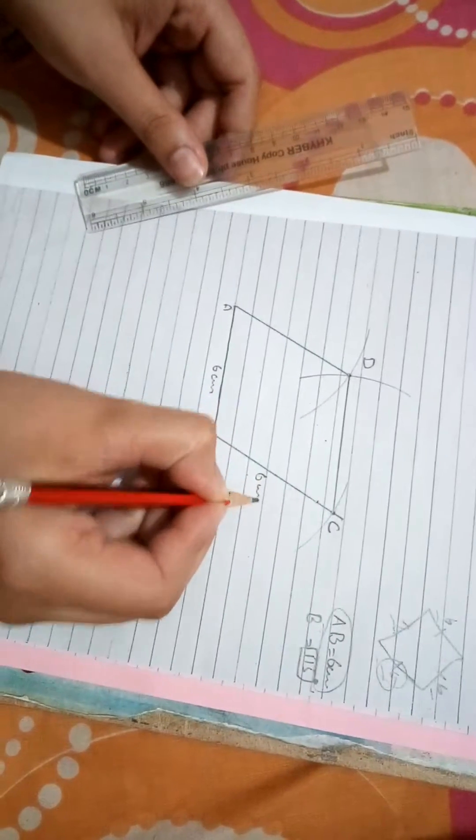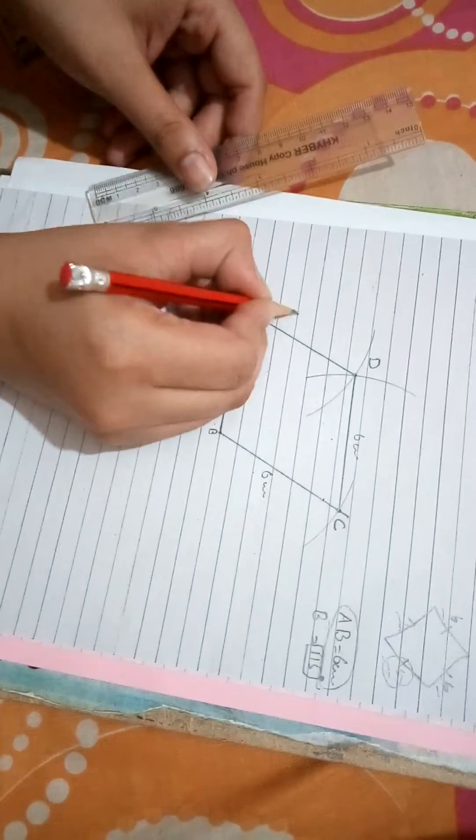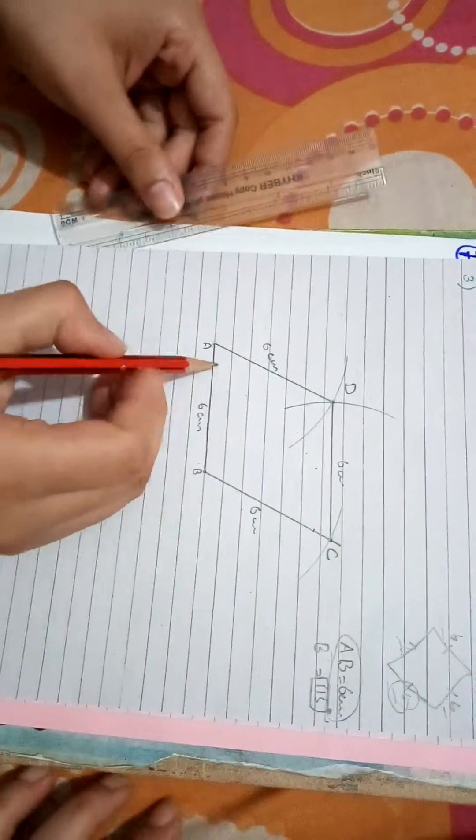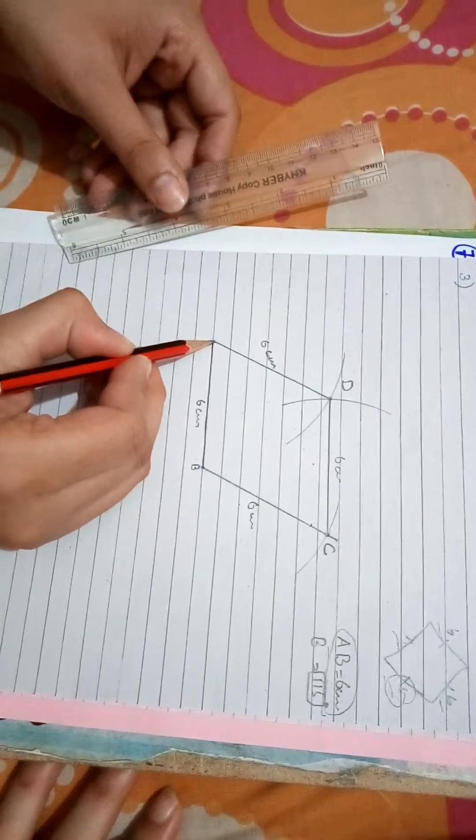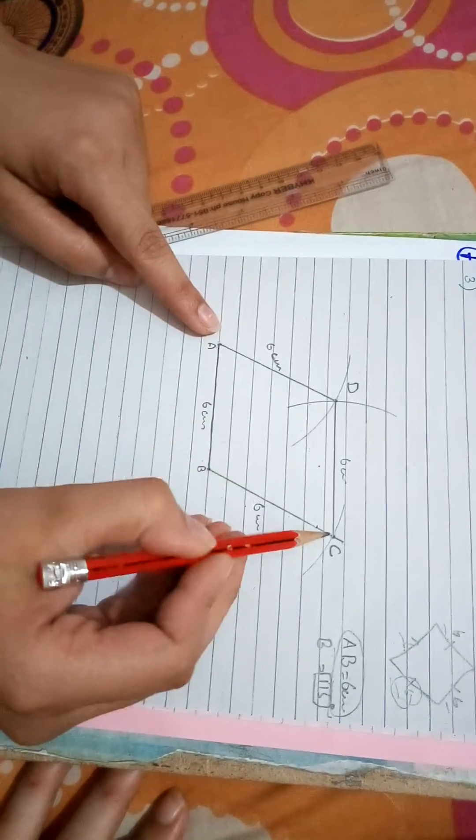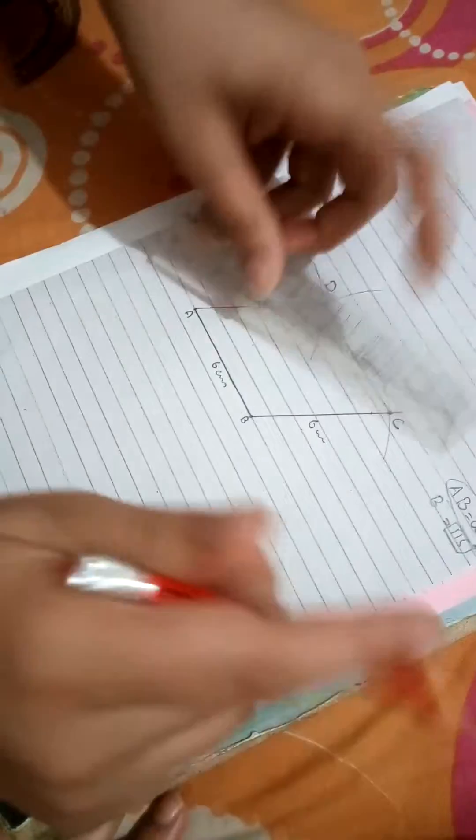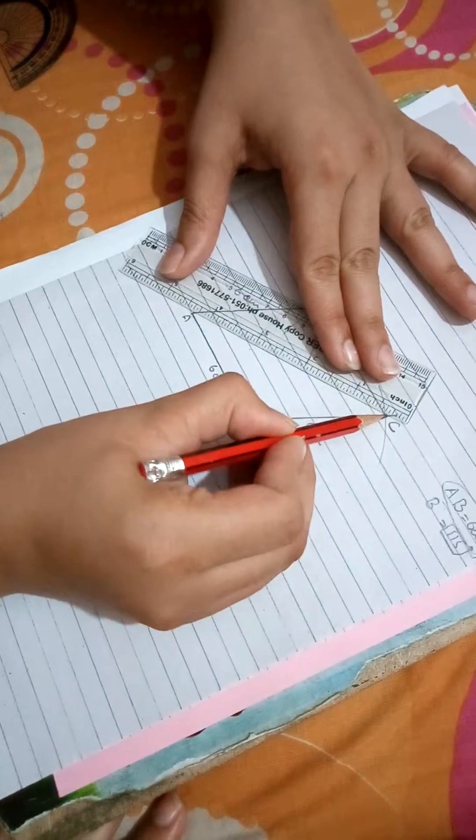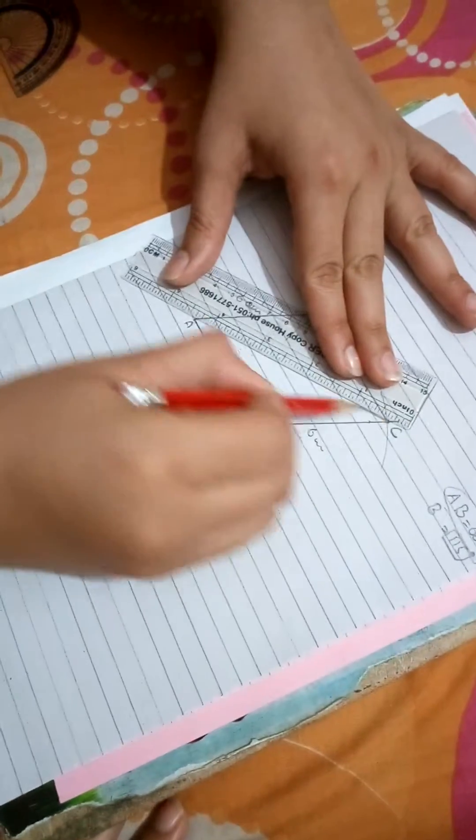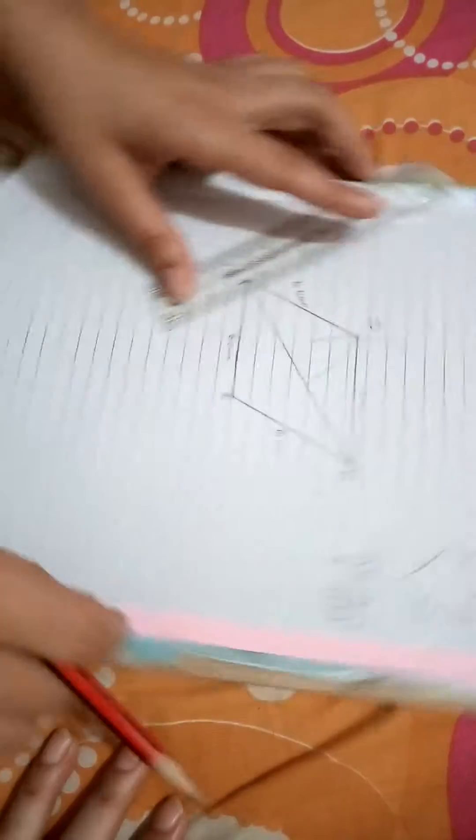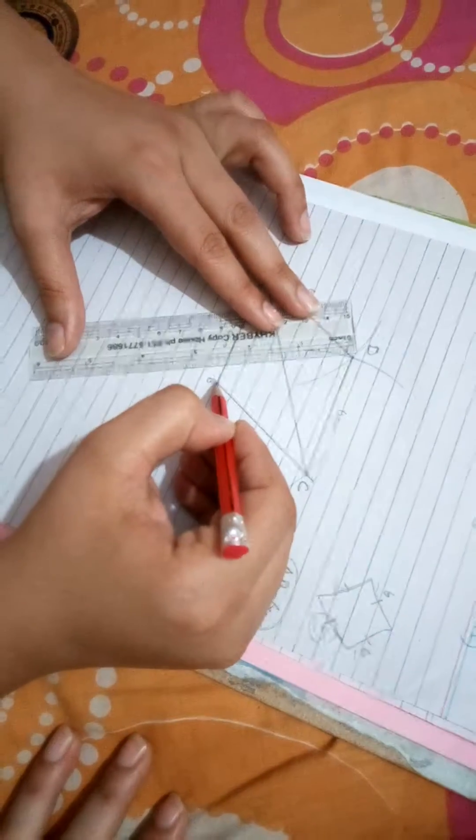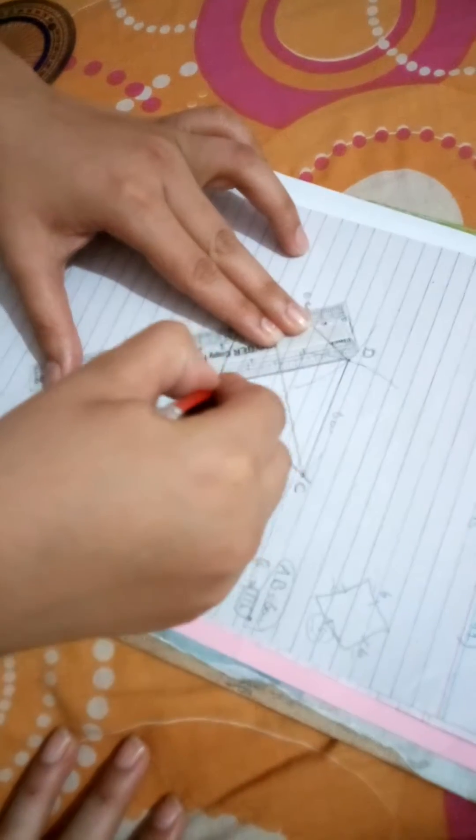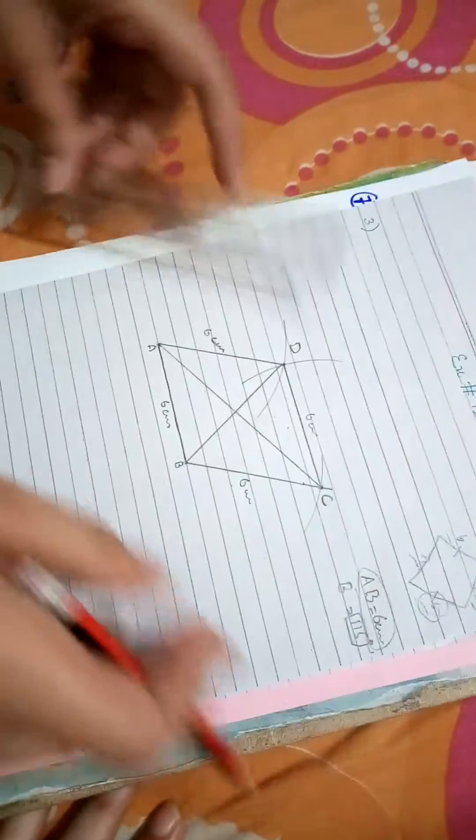Label it. Now the diagonals are the cross of the vertices. Suppose A and the opposite of A is C, make a diagonal AC. The other diagonal is D and the opposite of vertex D is vertex B, so combine these two vertices.